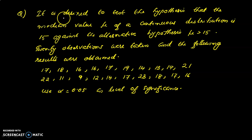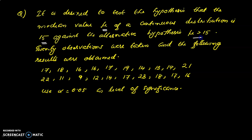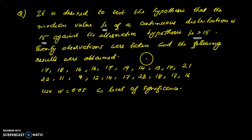It is desired to test the hypothesis that the median value mu of a continuous distribution is 15 against the alternative that mu is greater than 50. 20 observations were taken and the following results were obtained: 17, 18,